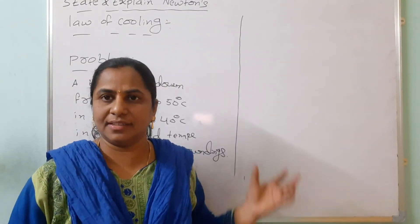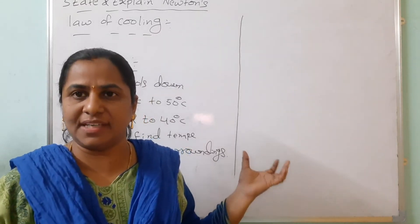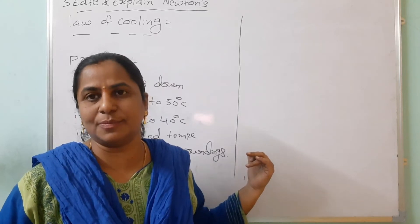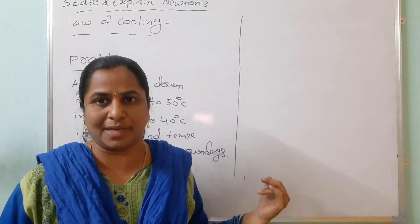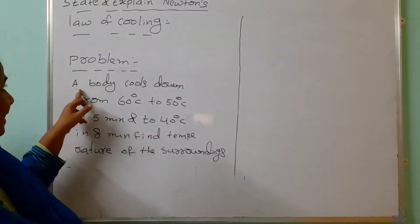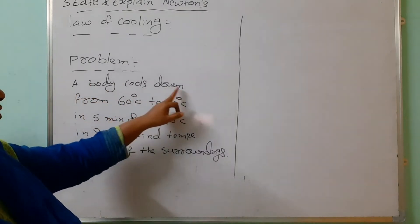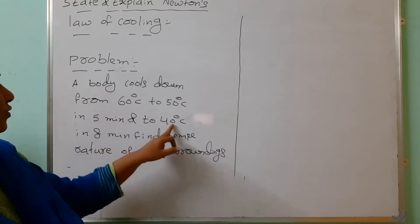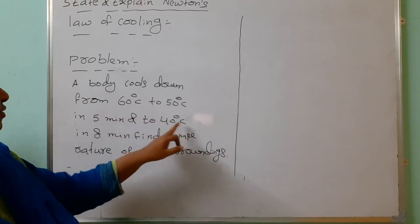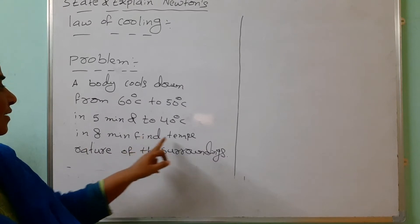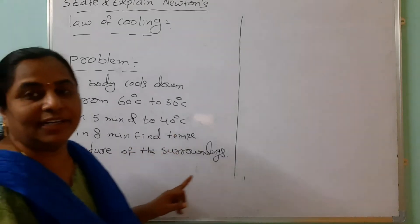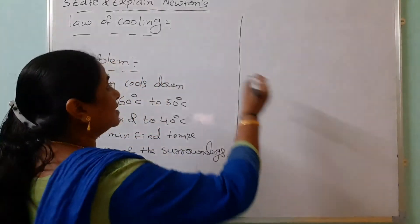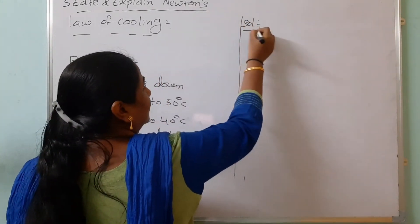Along with Newton's law of cooling, they are giving one more combination problem. It is very important. Newton's law of cooling is for 6 marks and this combination problem is for 2 marks. Look here. The given data is: a body cools down from 60 to 50 degrees centigrade in 5 minutes, then to 40 degrees centigrade, means 50 to 40 degrees centigrade, it is 8 minutes. From this given data, we can find out what is the temperature of the surroundings. From Newton's law of cooling only we can do this.